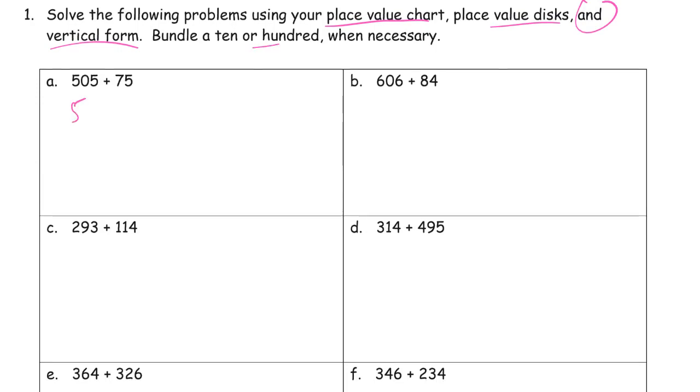So we'll just set this up vertically. 505, 75. 5 plus 5 is 10. Got to compose a 10 here. And 7 and 1, that's 8 tens, 580.